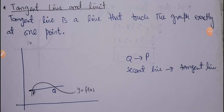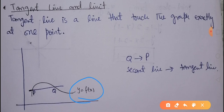Next we look at the tangent line and its relation to the limit. A tangent line is a line that touches the graph at exactly one point without crossing it. At every point on a curve, we have a different tangent line. Suppose we have a graph of y = f(x) with two points P and Q on the curve and a secant line passing through both points. This secant line is not a tangent line right now because it crosses the graph at two points.